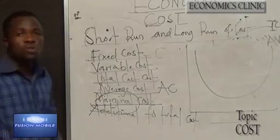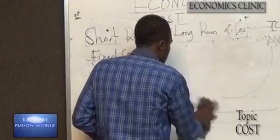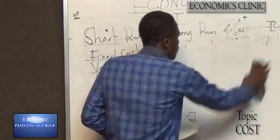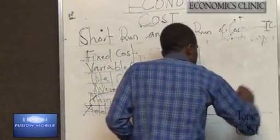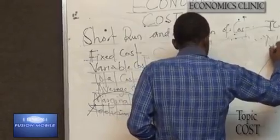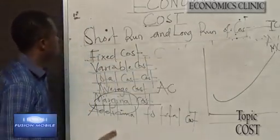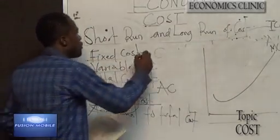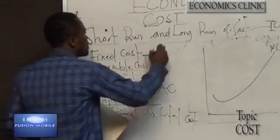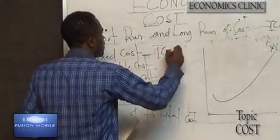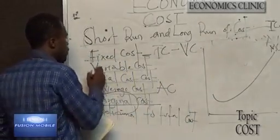This can also be represented on a graph. Now, to solve for cost, fixed cost, we use total cost minus variable cost.